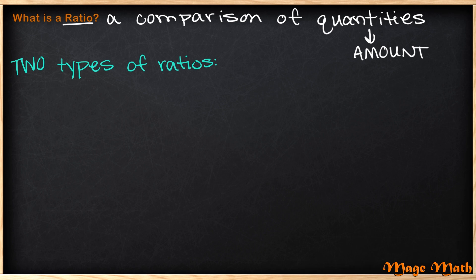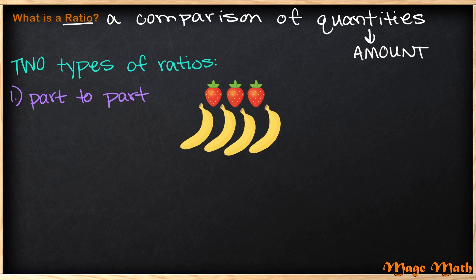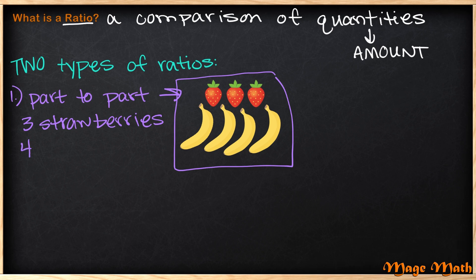Now that you understand what a ratio is, let's look at the two different types of ratios. The first type of ratio is called part-to-part. Part-to-part is when you are looking at the different parts of a total amount of objects. So let's look at the picture to the right of the fruit. We see that we have strawberries and bananas, so there is a total group of fruit here. But I know in this total group there are three strawberries, and I know there are four bananas.